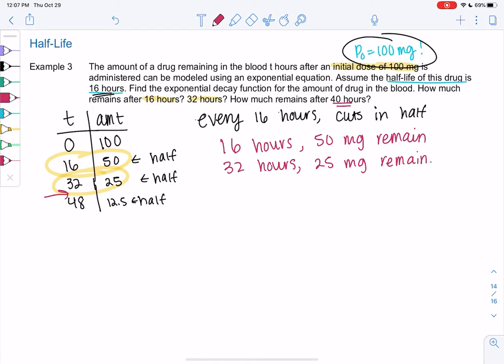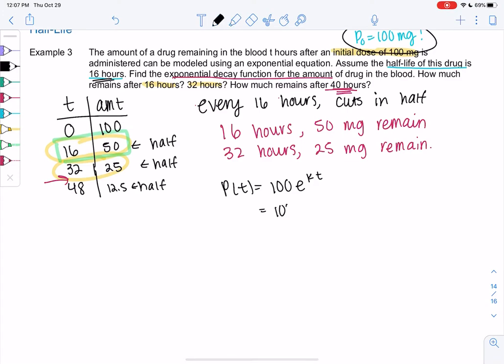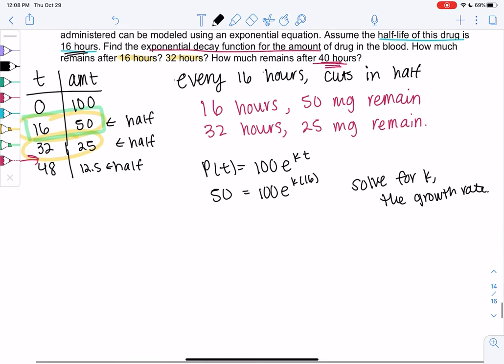So let's do the rest of the question. Let's find the equation, and we'll use that to find 40. So if I want to find the equation, I know the equation will be P(t) equals 100e to the kt, because 100 is my initial amount. And we'll just plug in one of these three points. I'll probably just plug in 16, because that's the first one. So what we know is 100e to the k times 16 for time equals 50. And we'll solve for k, the growth rate. So I'm going to divide both sides by 100. And so we get 1 half equals e to the 16k.